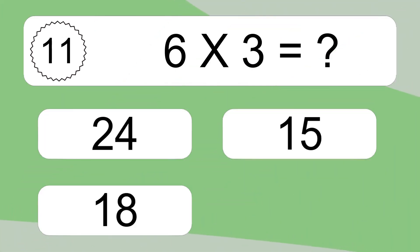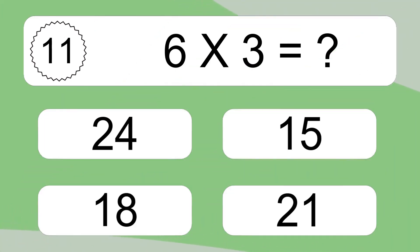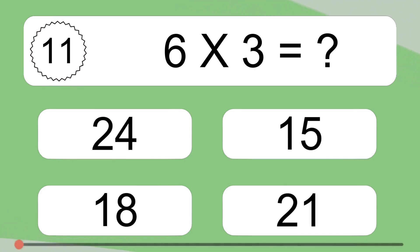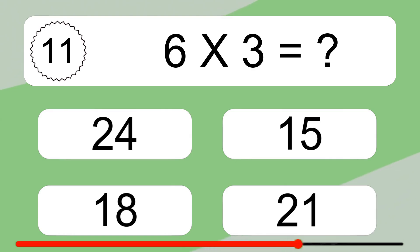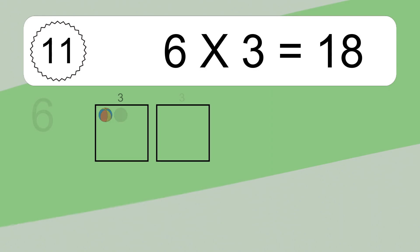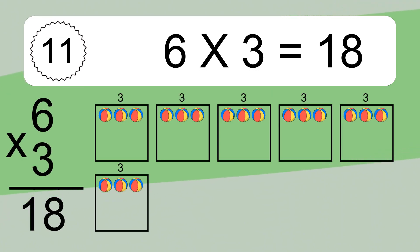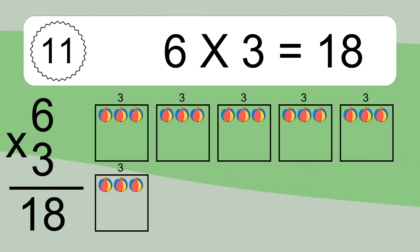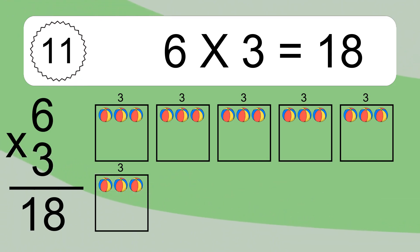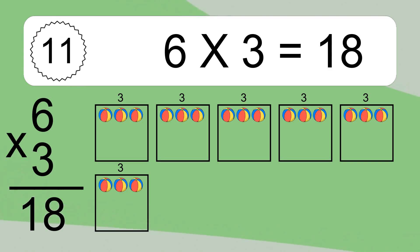6 times 3 equals what? 6 times 3 equals 18. We have 6 boxes, and each box has 3 colorful balls inside. If you count all the balls in all the boxes together, you will have 6 times 3 balls. This equals 18 balls.